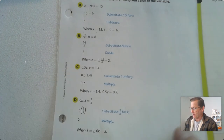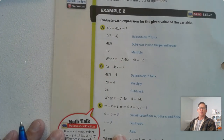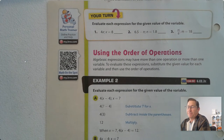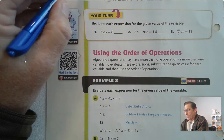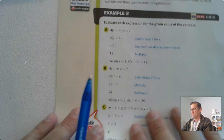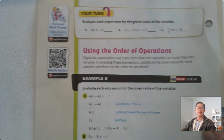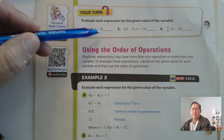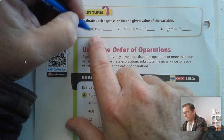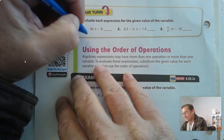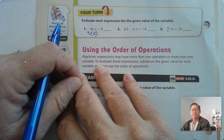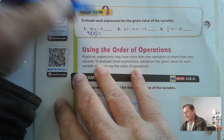Now we're going to page 272 and practice some on our own. Evaluate each expression for the given value of the variable. Number 1: we have 4 times x, and we need to evaluate when x equals 8. Step 1, substitute 8 for x. So 4 times 8 — what is 4 times 8 equal? 32.